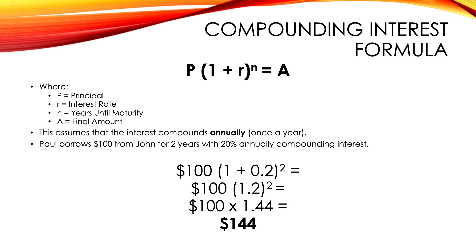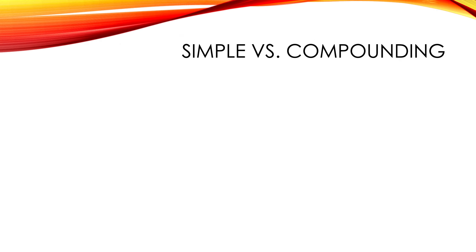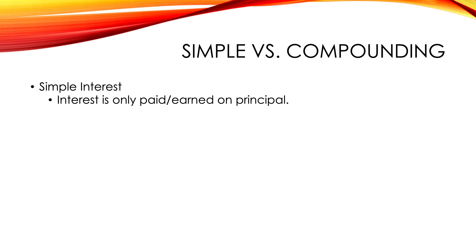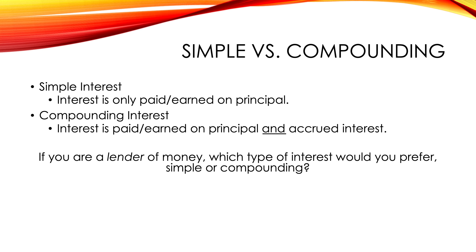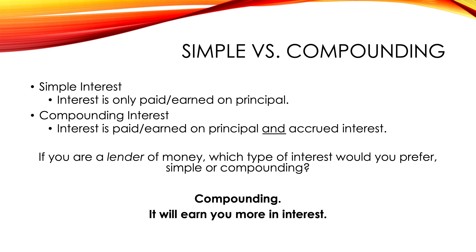Let's look at the difference between simple and compounding interest. Simple interest: interest is only paid or earned on the principal itself. Compounding interest: interest is paid or earned on the principal and accrued interest. Here's a question to apply what you've learned: if you are a lender of money, which type of interest would you prefer — simple or compounding? The answer is you'd always prefer compounding interest, because in the long run it's going to earn you more money. More frequently compounding, the better. And if you're a borrower, you'd prefer simple interest.